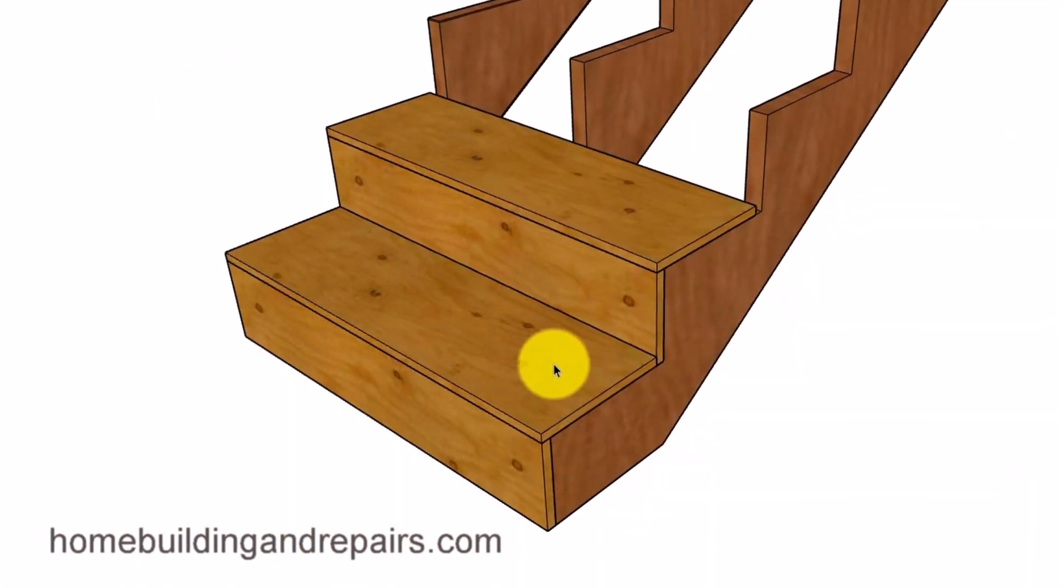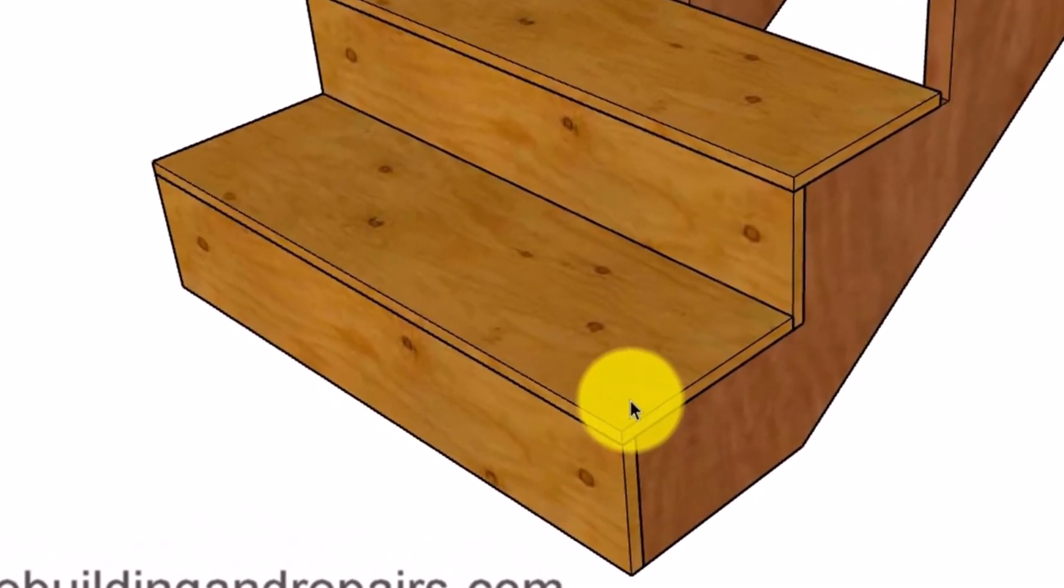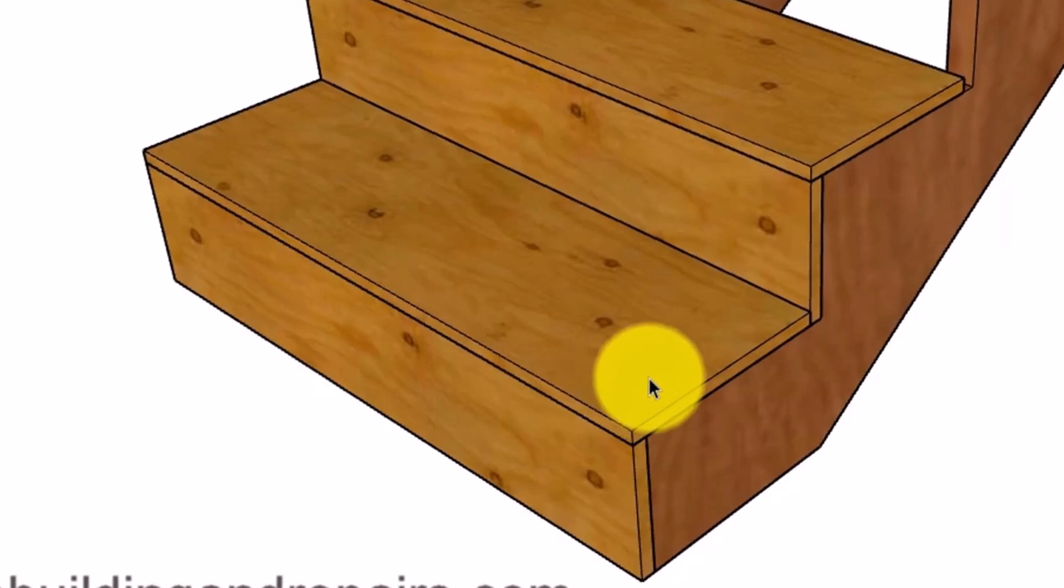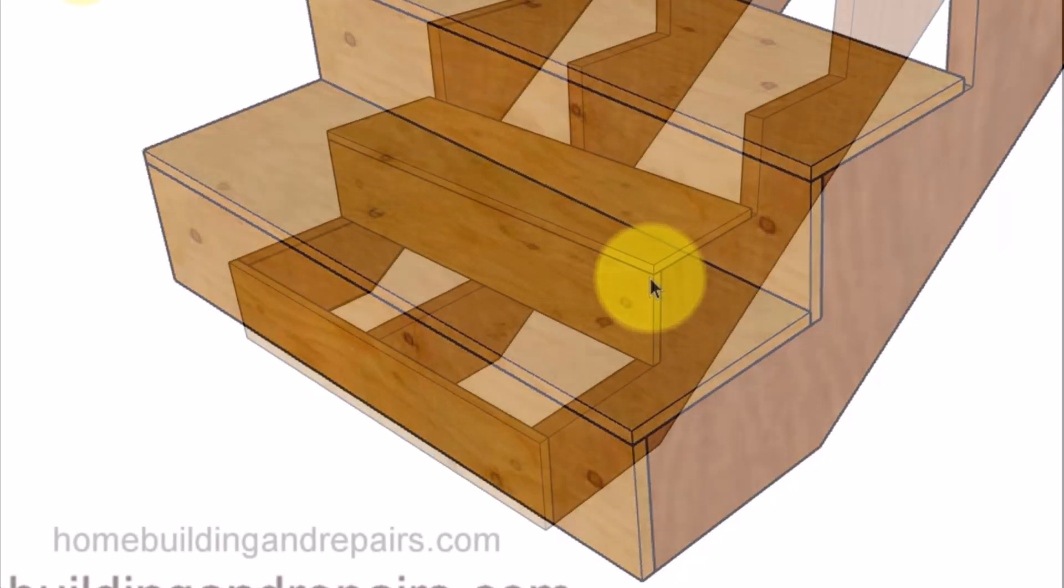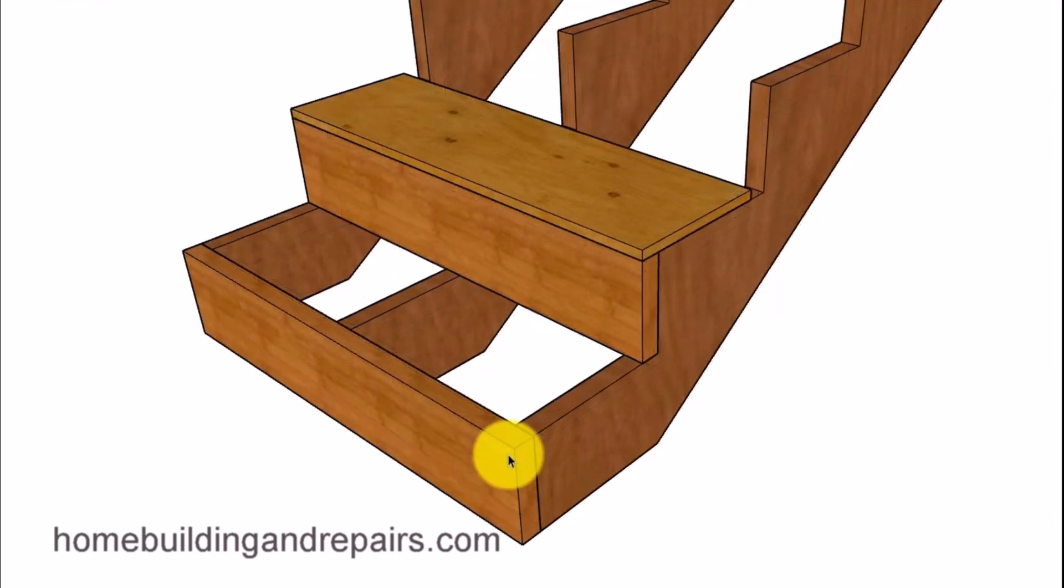So, let's get started. Here we have a standard stairway, built with 3 stringers and 3 foot wide stairs using 3 quarter inch plywood. Initially, we used 5 eighths of an inch plywood. Let's remove the tread and riser to examine it from the side. Everything looks straight and perfect.